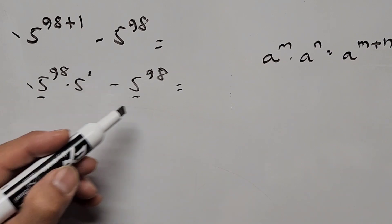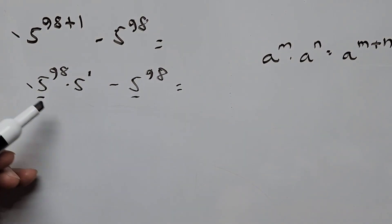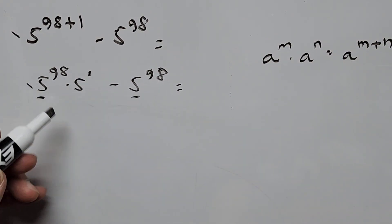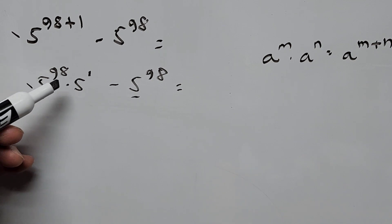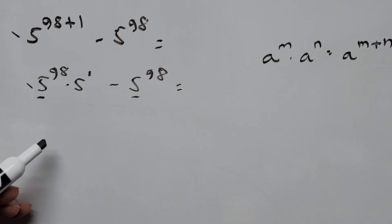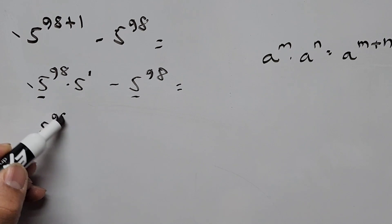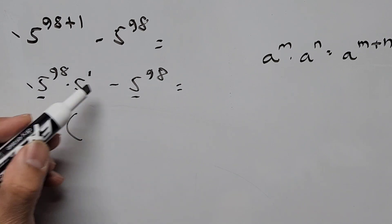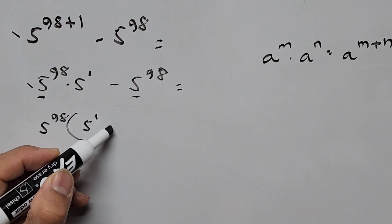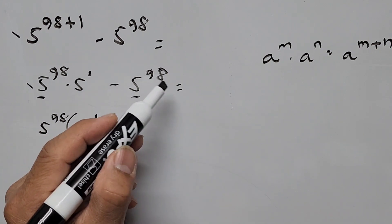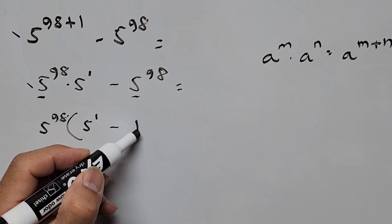So from here now we can factor out 5 to the power of 98 on both terms since this 5 to the power of 98 is common. So this is now 5 to the power of 98 times this quantity: what's left is 5 to the power of 1 minus, factoring out 5 to the power of 98, what remains is 1.